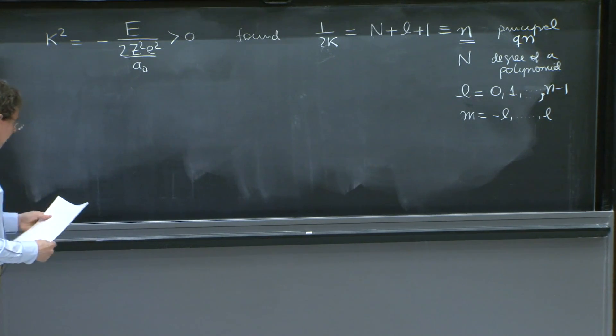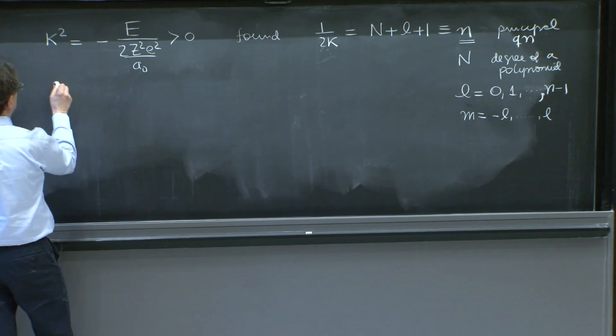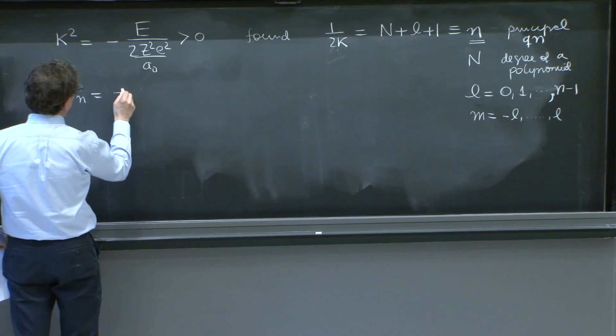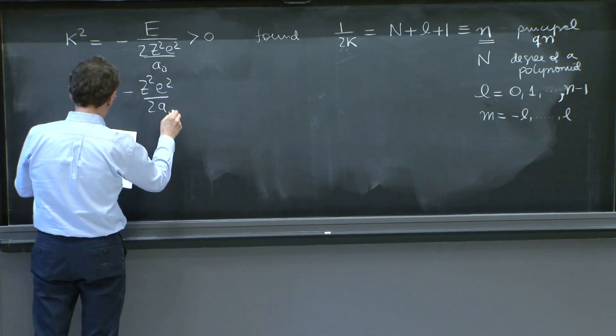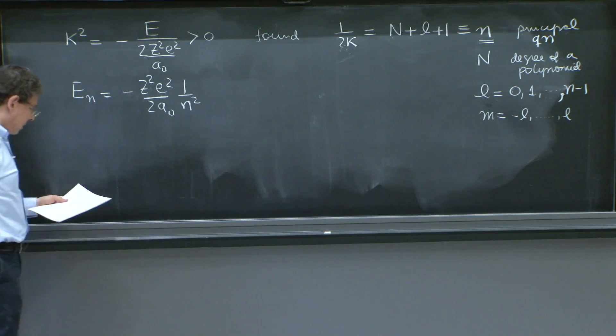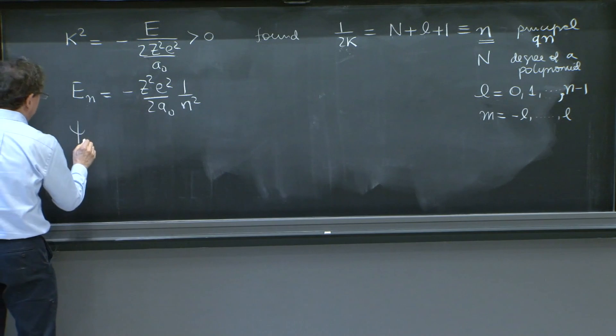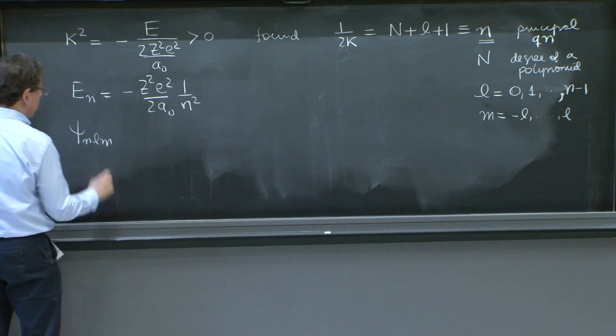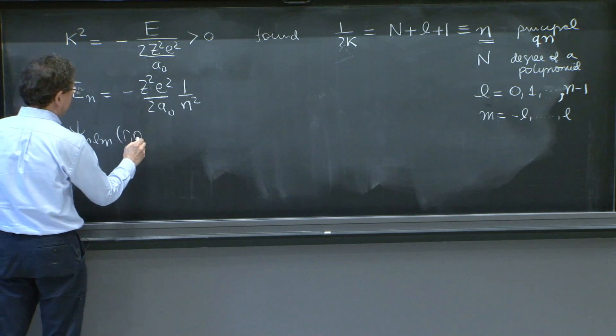And those are the states of the hydrogen atom. So the energies in terms of n are minus z squared, e squared, over 2 a0, 1 over n, little n squared. And the solutions, psi n, l, m, that depend on r, theta, and phi.